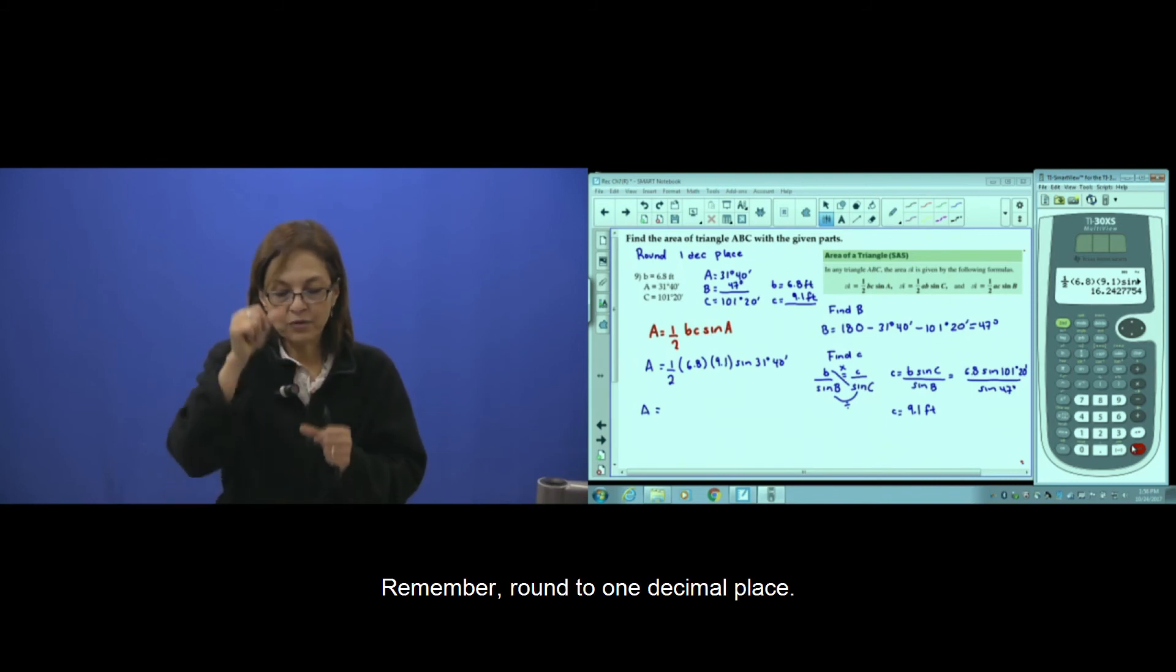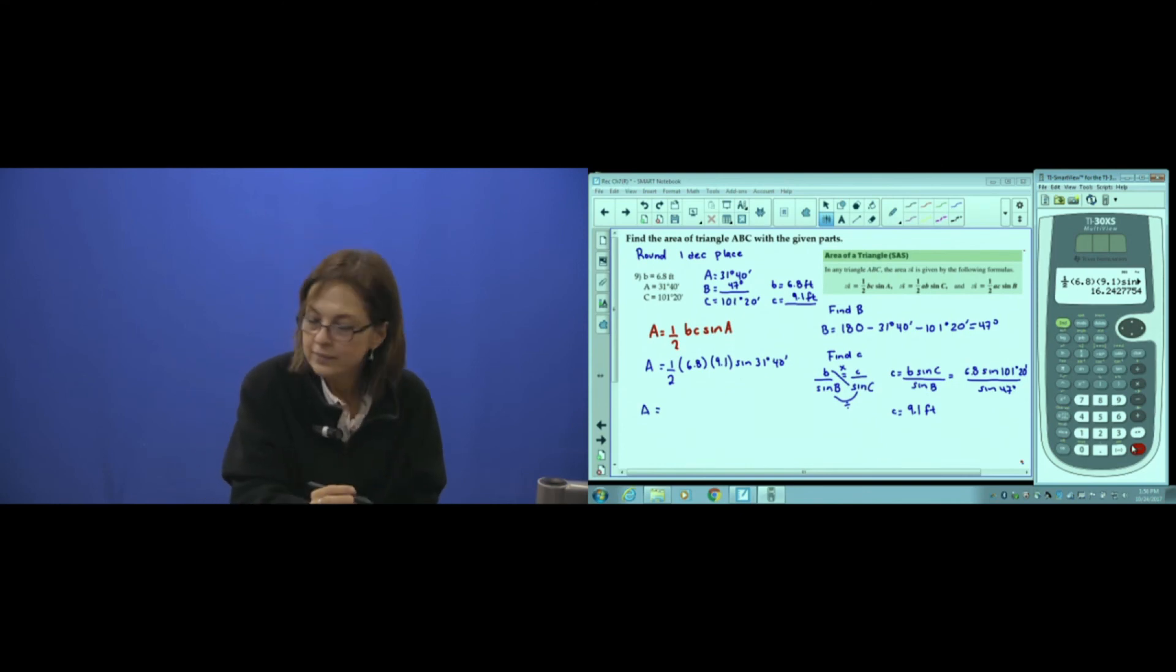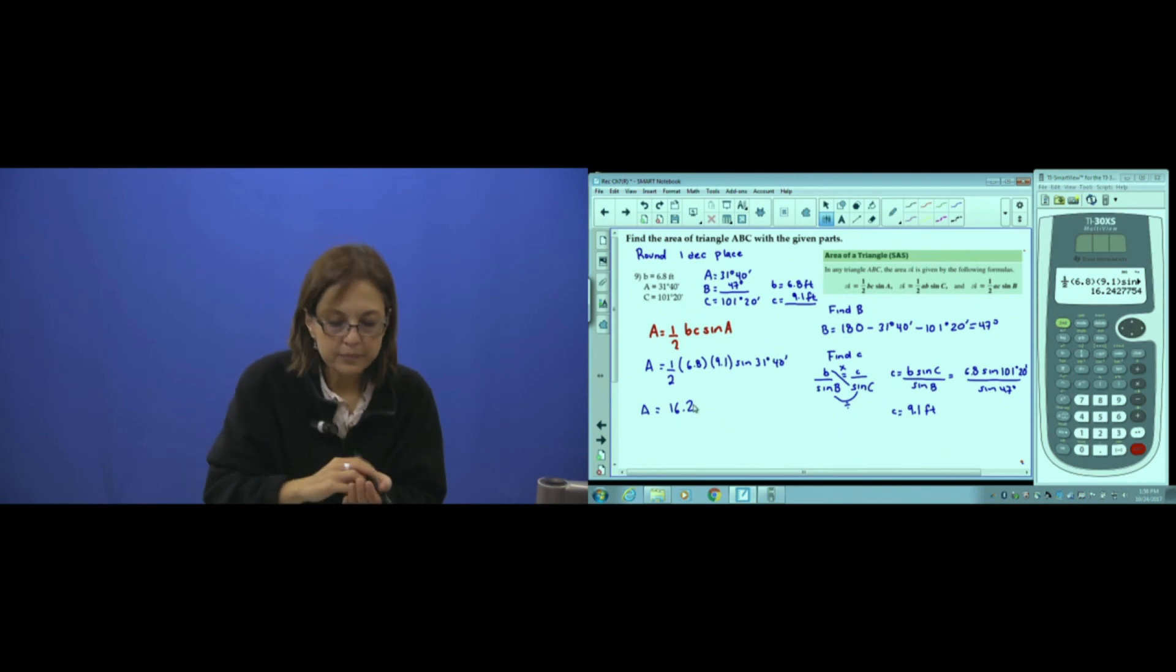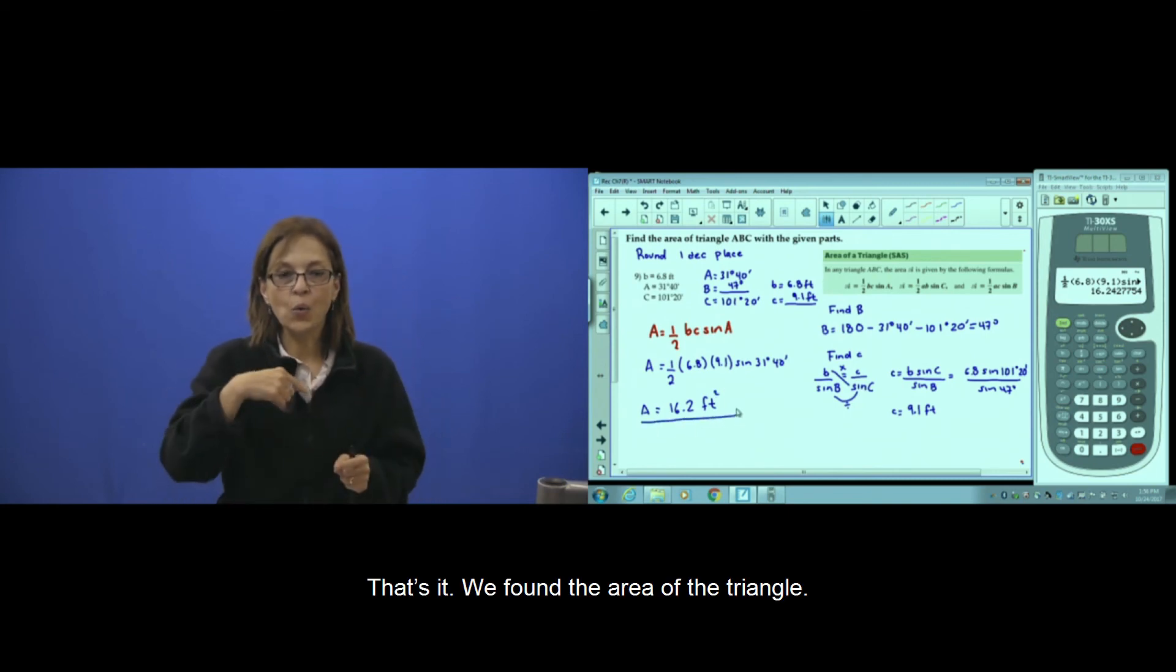And remember, round to one decimal place. Don't forget the square units. And that's it. We found the area of the triangle.